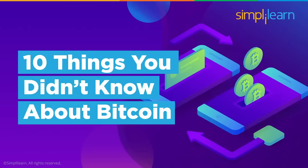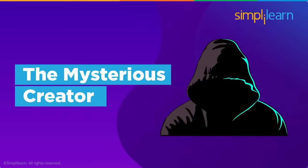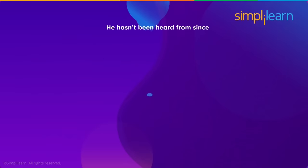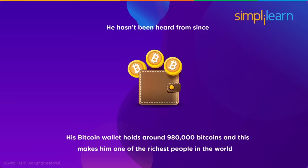Now let's talk about 10 things you didn't know about Bitcoin. First: the mysterious creator. In 2009, a person or group of people known as Satoshi Nakamoto introduced Bitcoin to the world. He vanished off the internet in late 2010 and hasn't been heard from since. Nobody really knows if he's even alive or dead — the only communication people had with him were through emails and forums. His Bitcoin wallet holds around 980,000 bitcoins, making him one of the richest people on the planet.